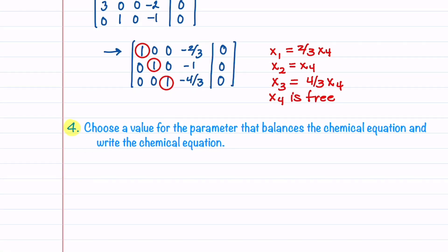Our last step is to choose a value for the parameter that makes X1, X2, and X3 whole numbers — since we can't have a fraction of a chemical element. Noticing that we have 2/3 and 4/3 in our answers for X1 and X3, the best choice is X4 equals 3, which eliminates those fractions. This gives us X1 equals 2, X2 equals 3, and X3 equals 4.